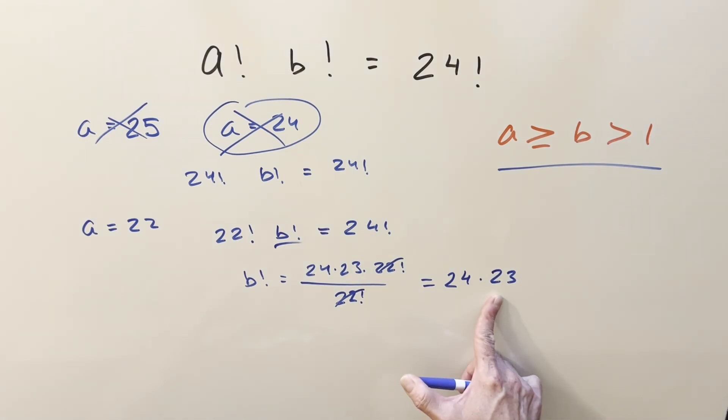Well, I'm not sure what that multiplies out to, maybe 562 or 552. But anyway, the question is, can we have a b value that's going to be the same as this?